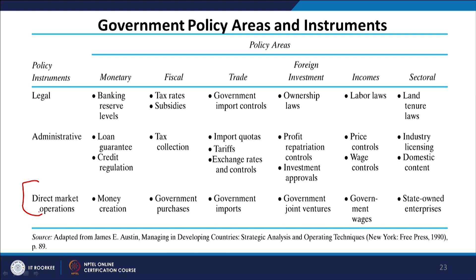Direct market operations include money creation; the fiscal direct operation is government purchases; and the trade instrument available through direct market operation is government imports. Then the government can set up joint ventures and set minimum wages, and you can also have state-owned enterprises.